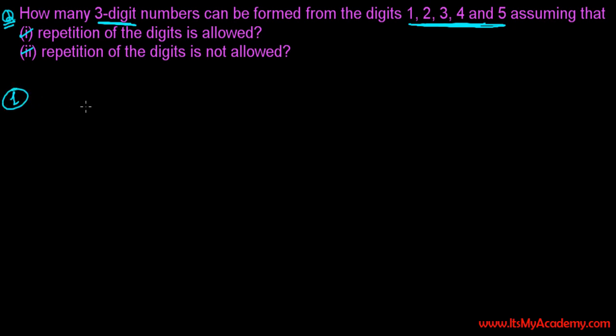So let's do the first one when repetition is allowed. We need to make a three-digit number, and total numbers we have is 1, 2, 3, 4, and 5. So there are five digits and we need to make a three-digit number. Since repetition is allowed,